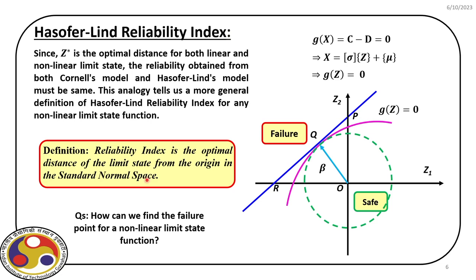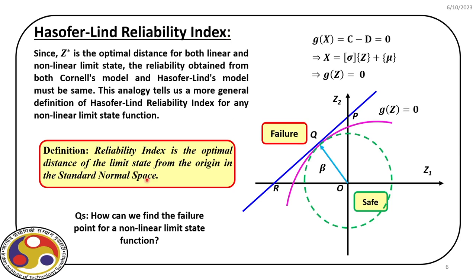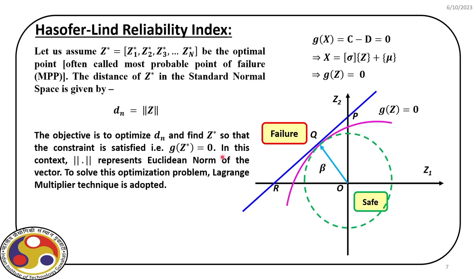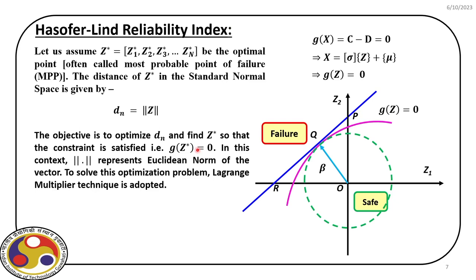Our job is to find z star — any point on the limit state — and among all possibilities the one closest to the origin in standard normal space gives us the design point. So we find out this optimal distance from the origin for both linear and non-linear limit states. This is an optimization problem, and we can employ any technique. In this discussion we are going to solve it using the Lagrange multiplier technique.